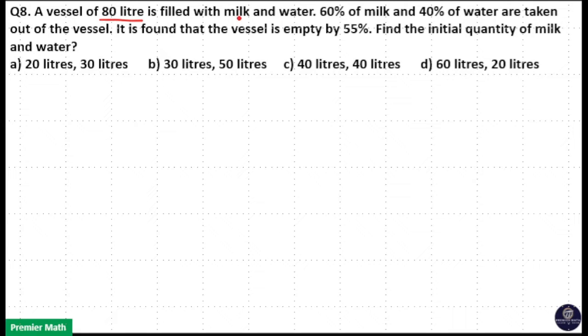A vessel of 80 liter is filled with milk and water. 60 percentage of milk and 40 percentage of water are taken out of the vessel. It is found that the vessel is empty by 55 percentage. Find the initial quantity of milk and water.